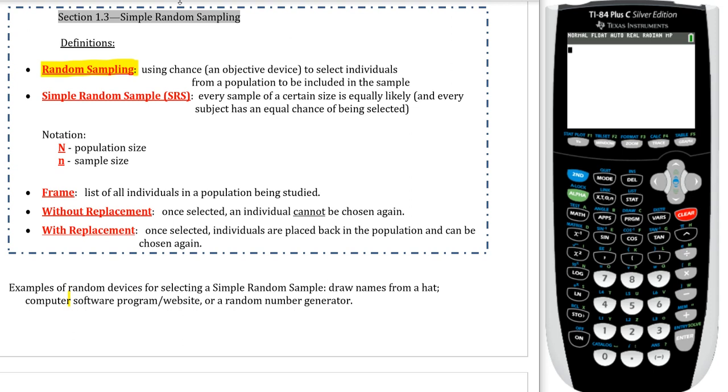Random sampling is going to be the best way to work with sampling in a study. It's just using chance to select individuals from a population. Because you're using chance, there is no inherent bias in the study. Now, if we call a random sample equally likely, or each sample of a certain size equally likely, then we call that a simple random sample.